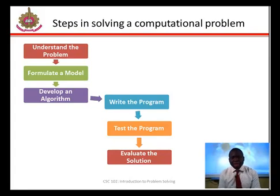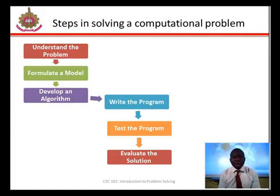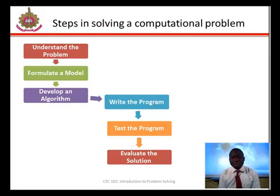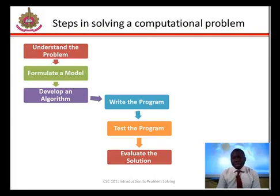The third step is to develop an algorithm. It is time to come up with a precise plan of what we want the computer to do — that is an algorithm. An algorithm is a precise sequence of instructions for solving a problem. The next step is to write the program. There is a need to transform the algorithm from step three into a set of instructions that can be understood by the computer. Writing a program is often called writing code or implementing an algorithm. The code or source code is actually the program itself.